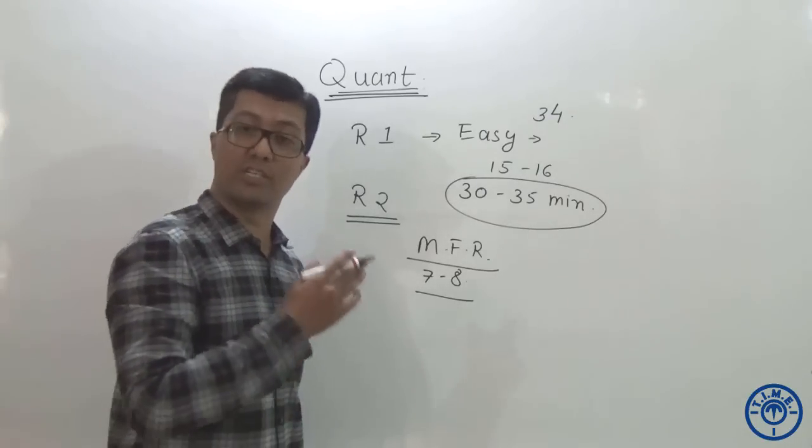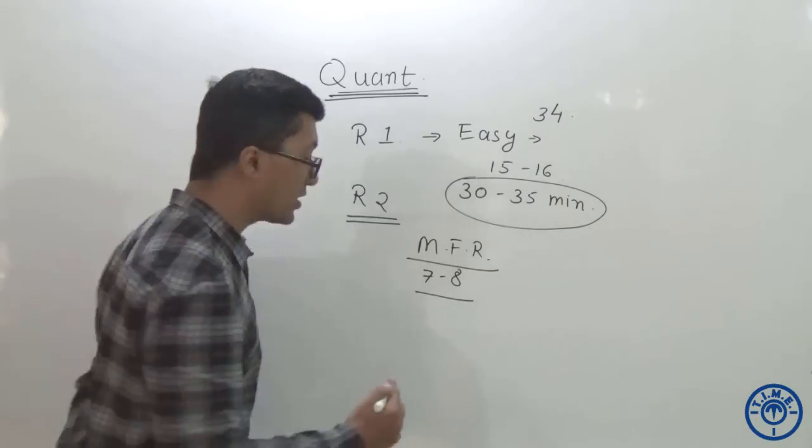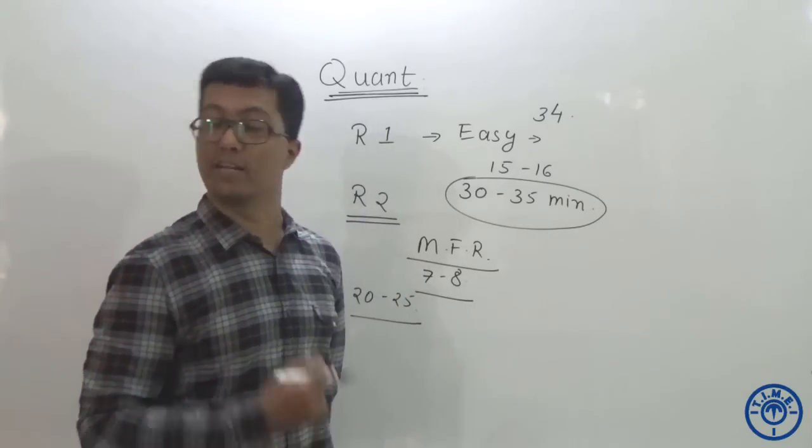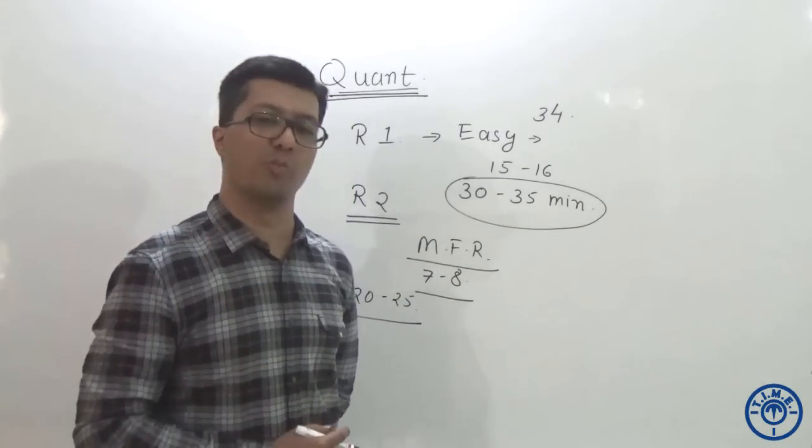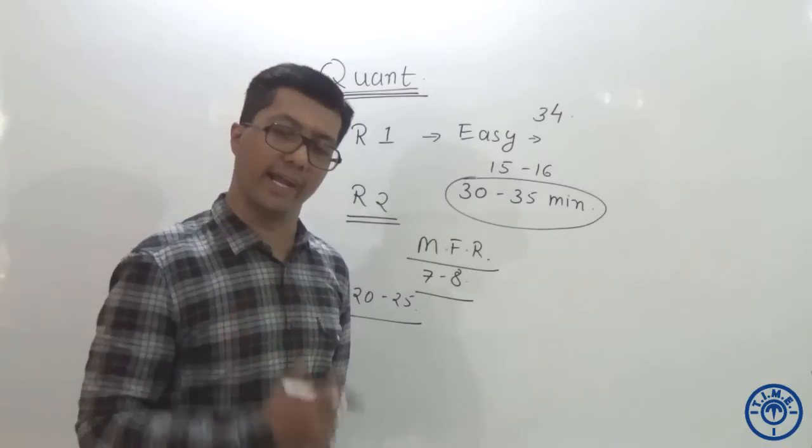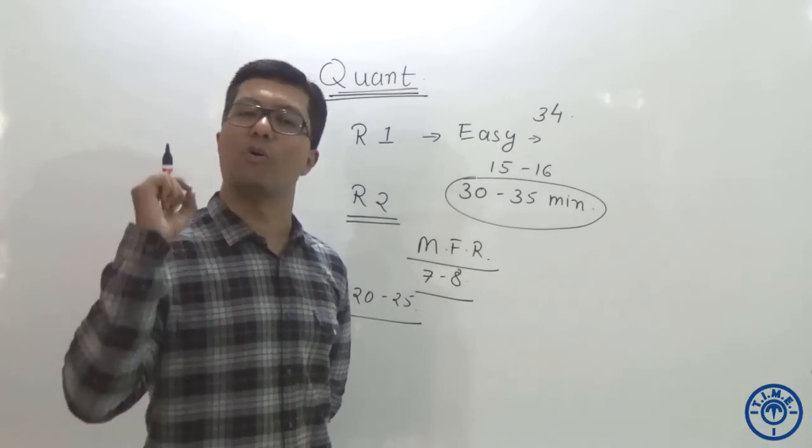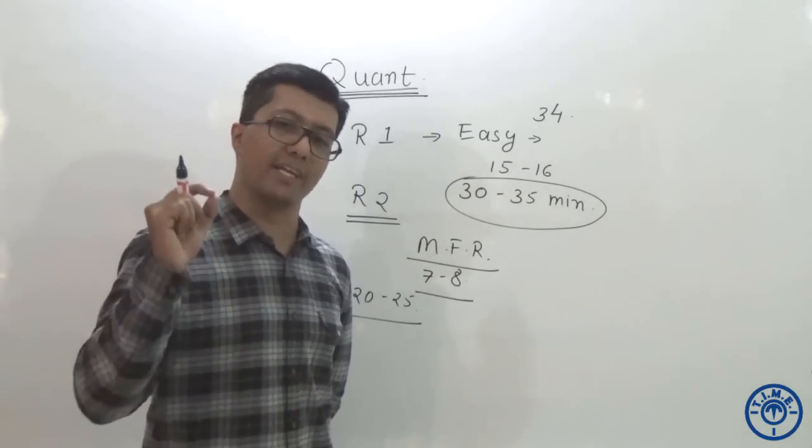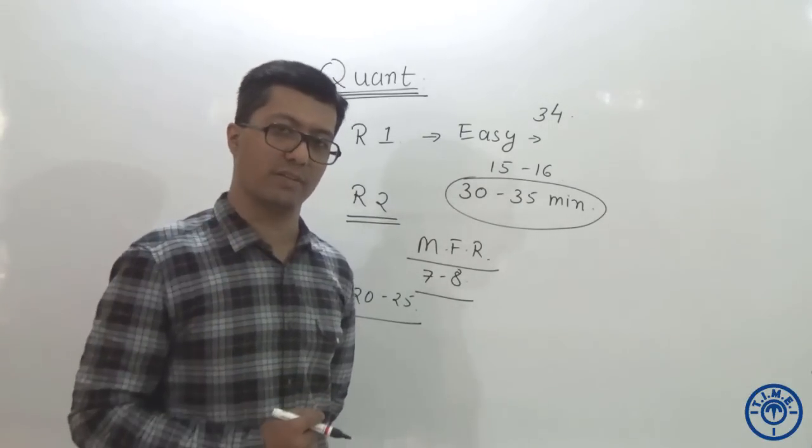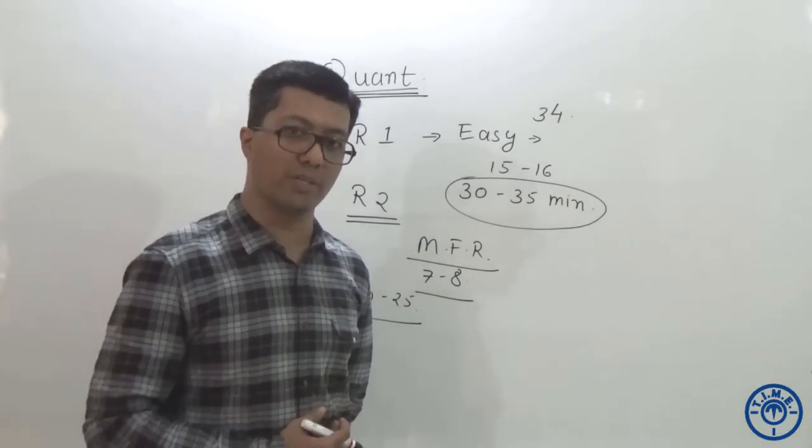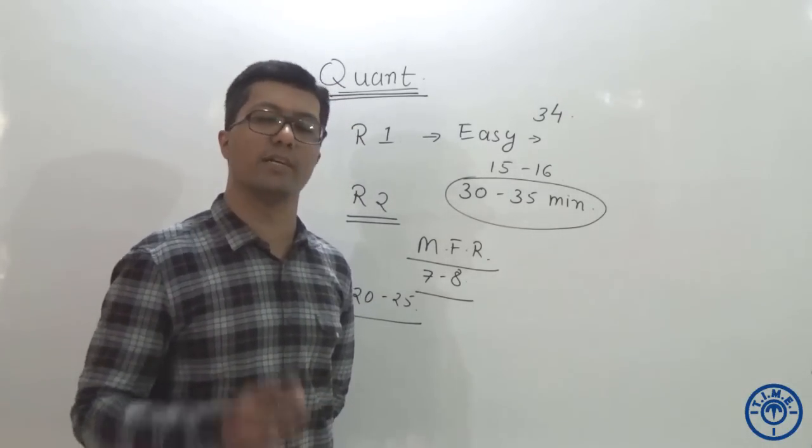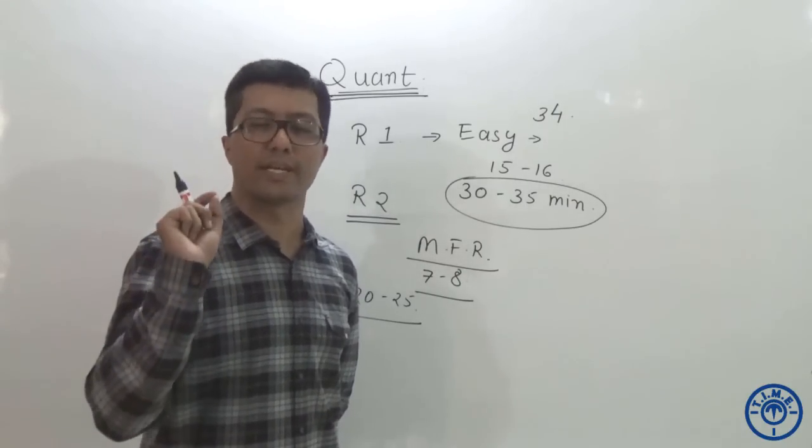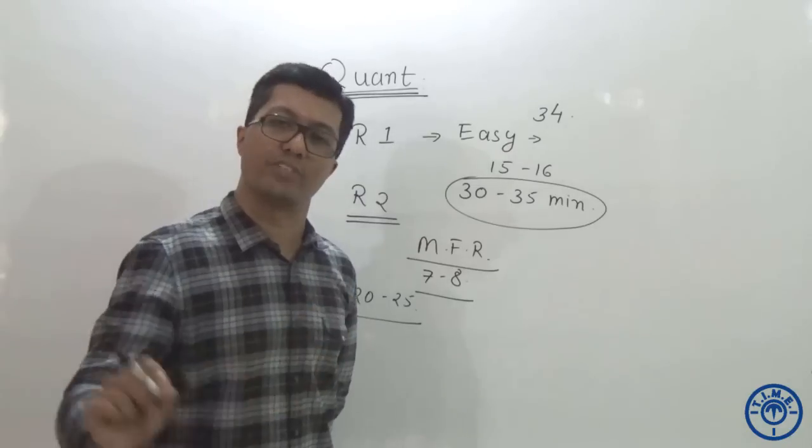If you are done with round number one within 35 even 40 minutes, you will still have 20 to 25 minutes left with you for round number two and if you are solving these seven to eight questions in the last moments, that will be it. That means you have done a wonderful job, you have already qualified the examination and you are aiming for higher percentile in quantitative aptitude section. Round number three is unsaid round for which you don't have to divide it in the norms of timing, is to identify the questions which are extremely difficult and leave them straight away.